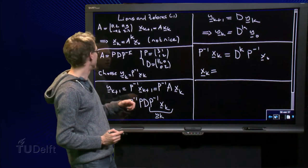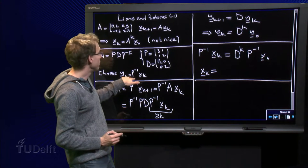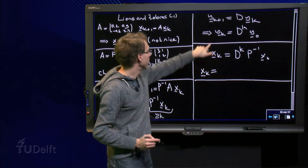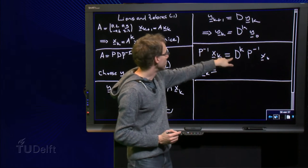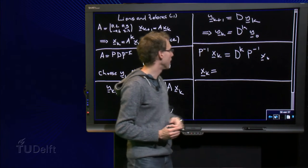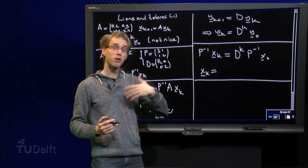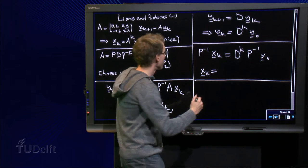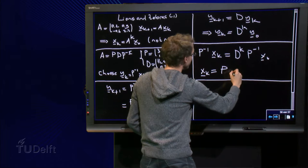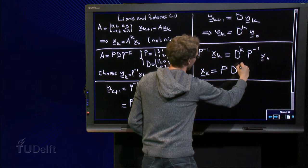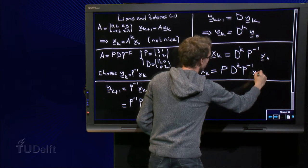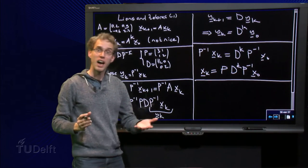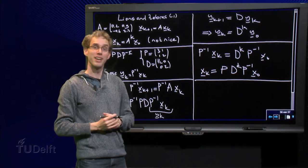Well, that is not so hard. Y_k = P^{-1} x_k, so y_k becomes P^{-1} x_k = D^k P^{-1} x_0. So now we can compute y_k. x_k becomes P D^k P^{-1} x_0. So there we have an explicit formula for x_k.